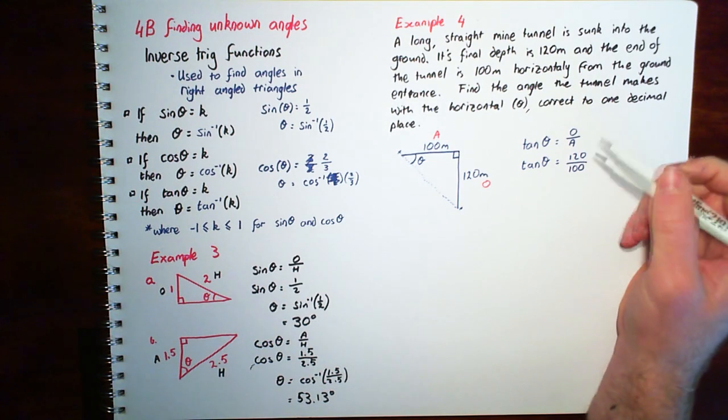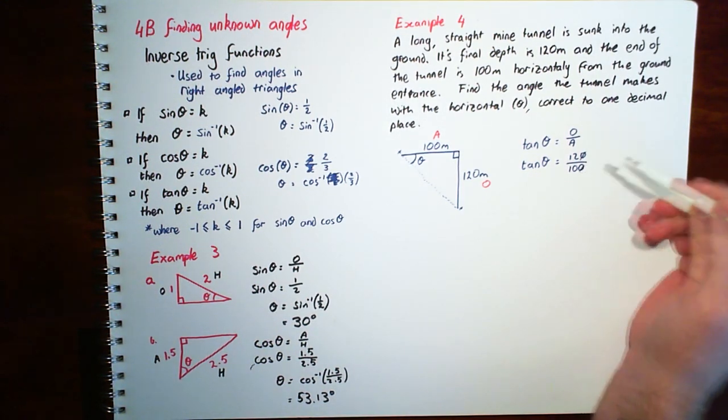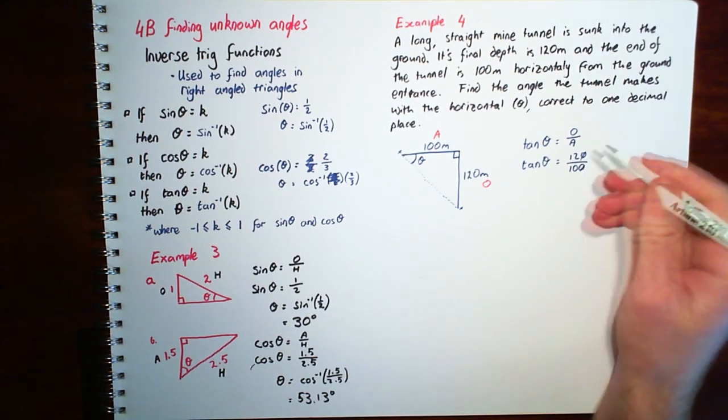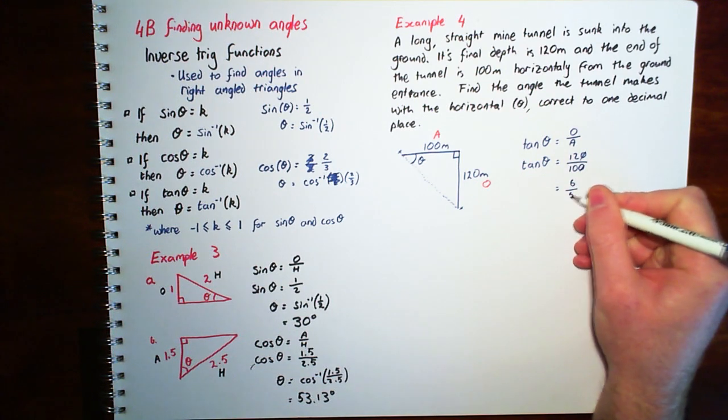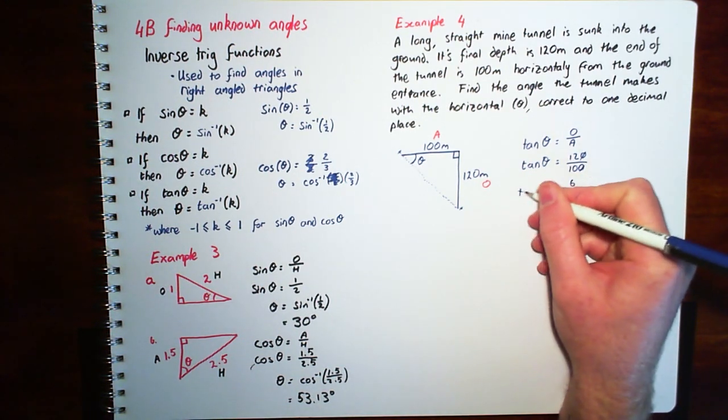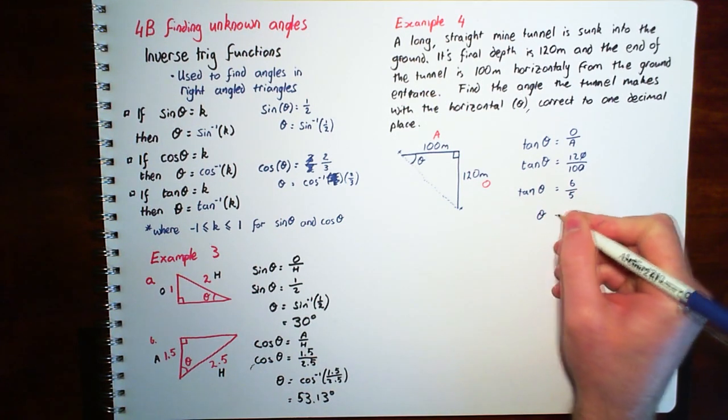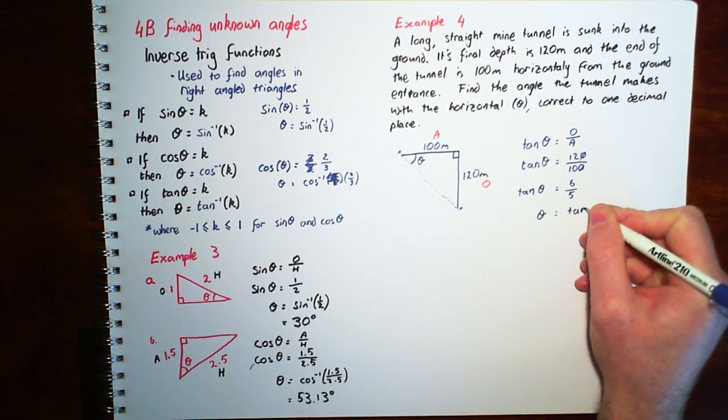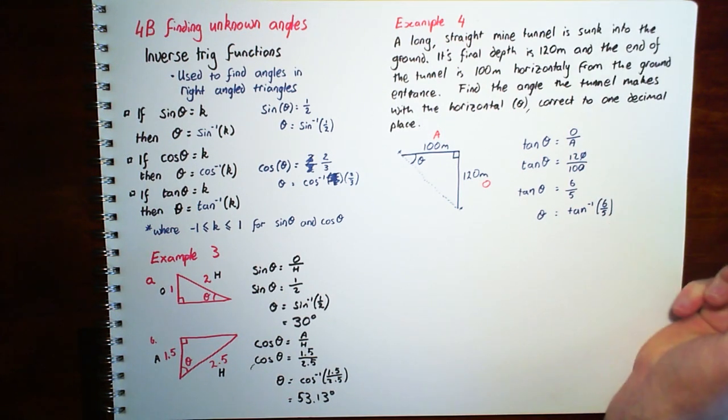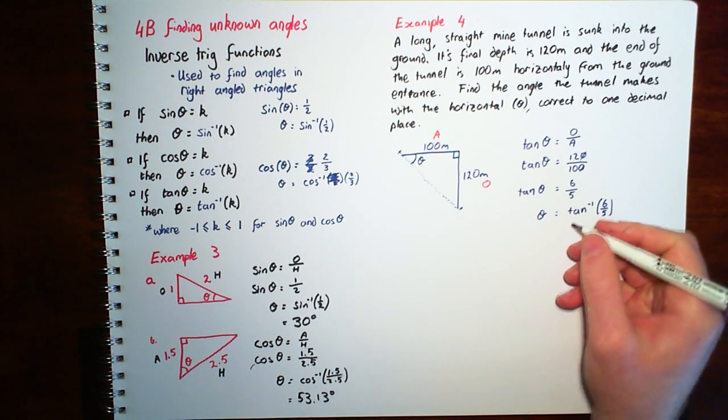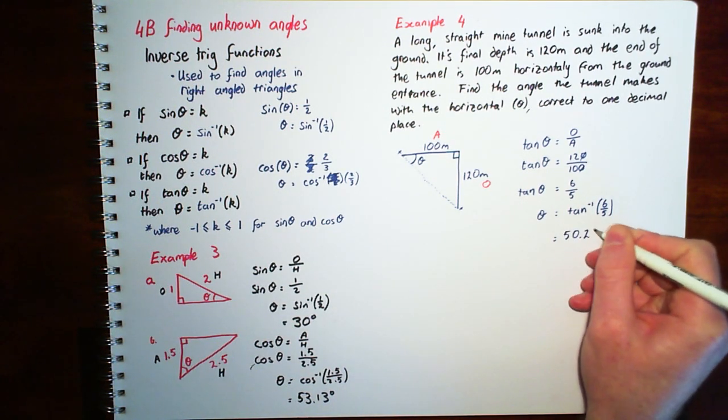Now if you're dividing 120 by 100, you can simplify the zeros. And then 12 over 10 simplifies down to 6 over 5. So tan theta equals 6 over 5. And theta is going to be the inverse of tan with 6 over 5 in the brackets. And if we work that out, we'll find that it's about 50.2 degrees.